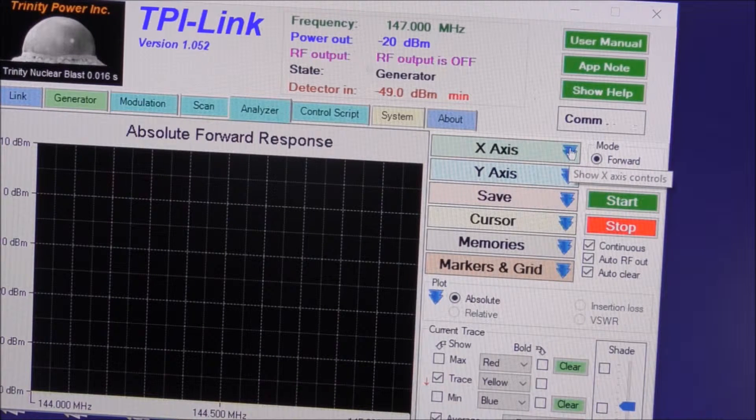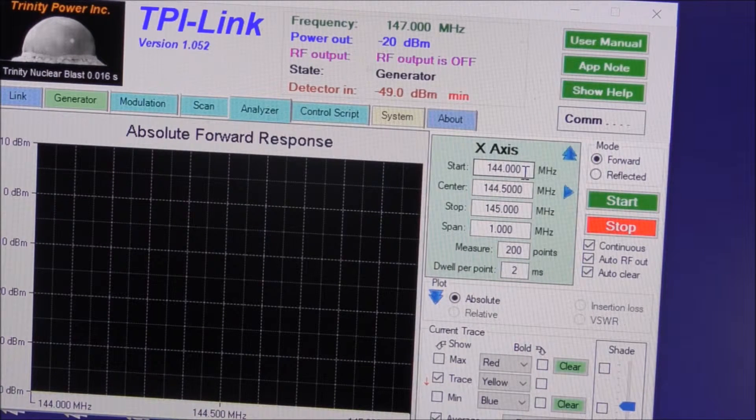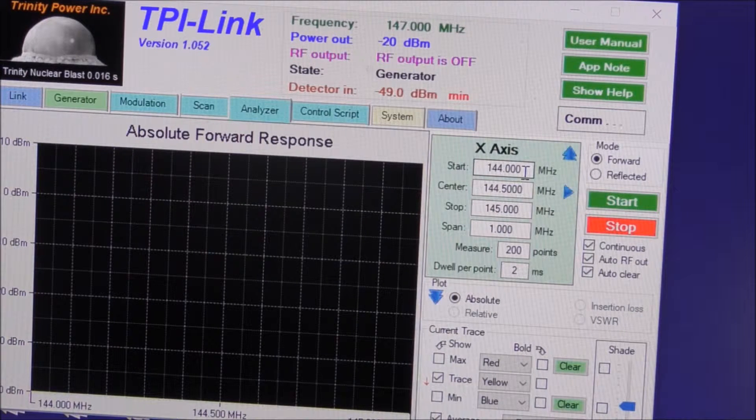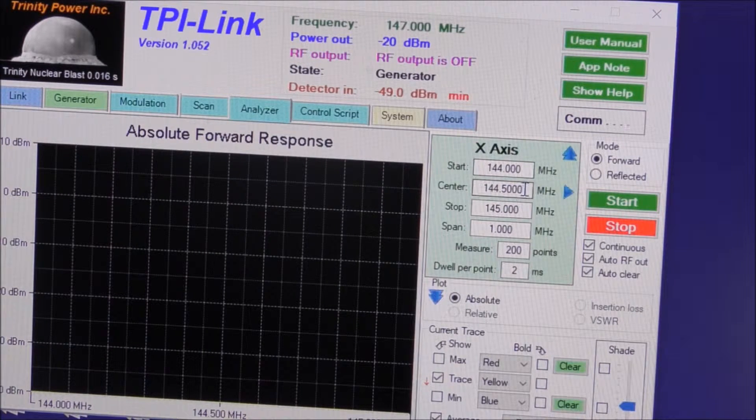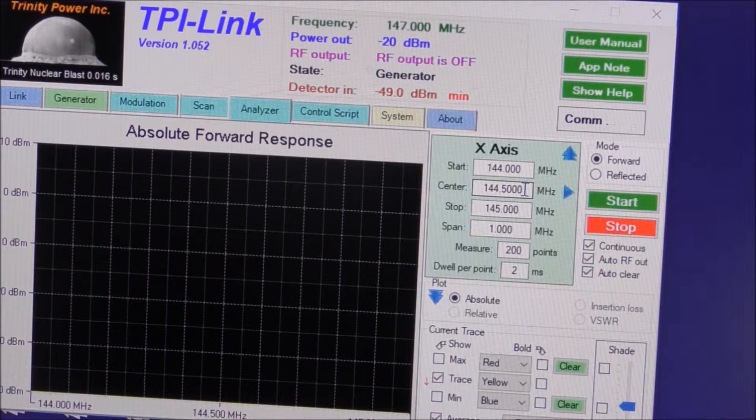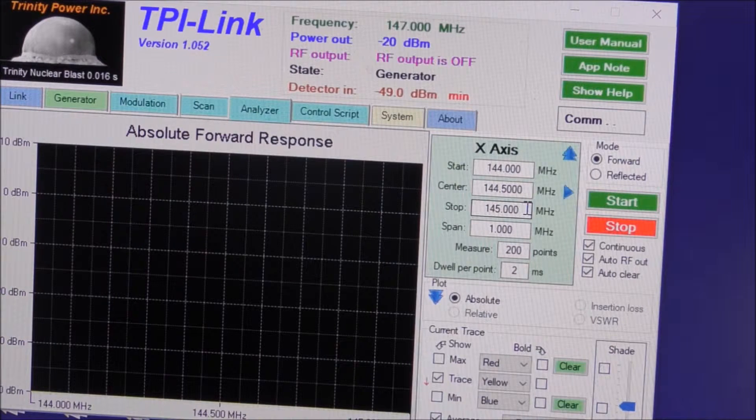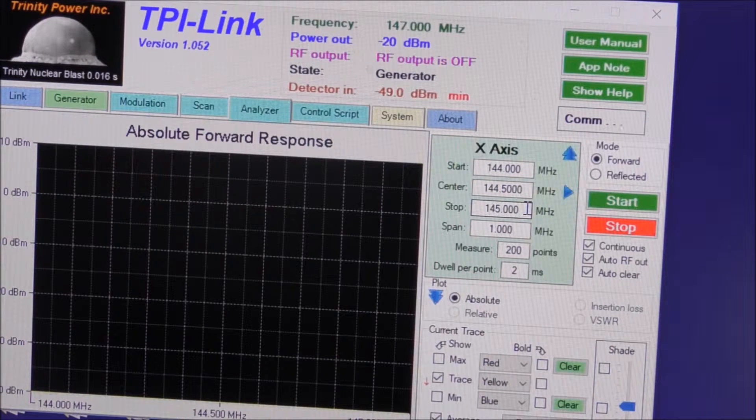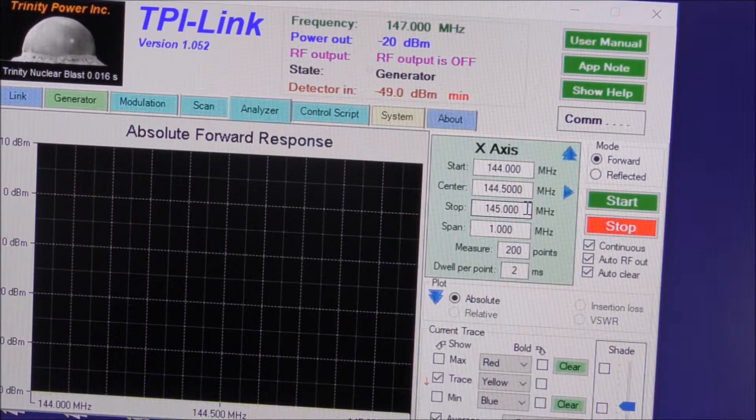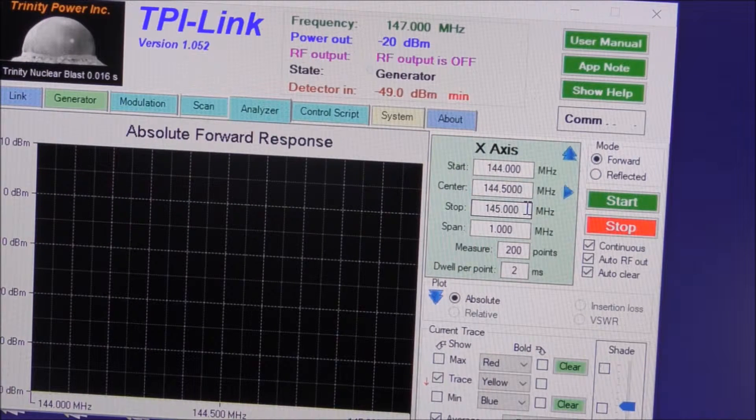We are going to check our X axis. We can see that we've got a start frequency of 144 MHz, a center frequency of 144.5, and a stop frequency of 145 MHz. So that should give us a nice sweep of the primary area where I'll be using this particular amplifier, that being the low end of 2 meters.